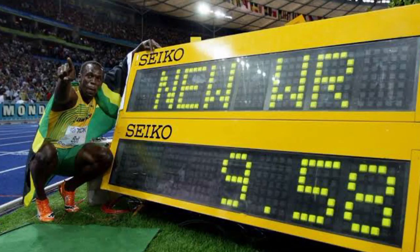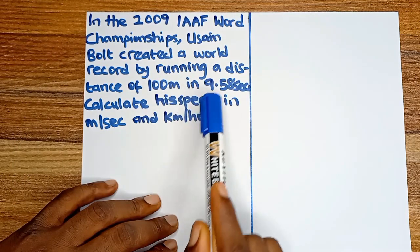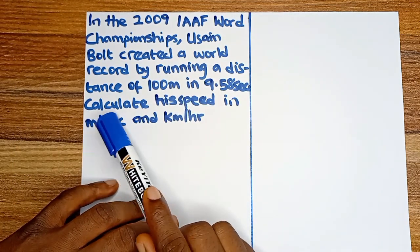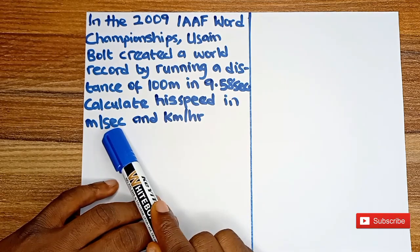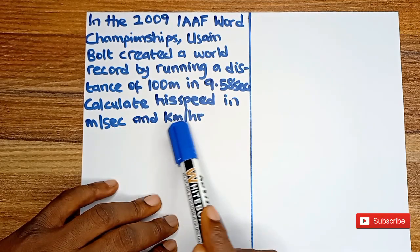Hi guys, let's look at this simple question that we have here. In the 2009 IAAF World Championship, Usain Bolt created a world record by running a distance of 100 meters in 9.58 seconds. We are told to calculate his speed in meters per second and kilometers per hour.